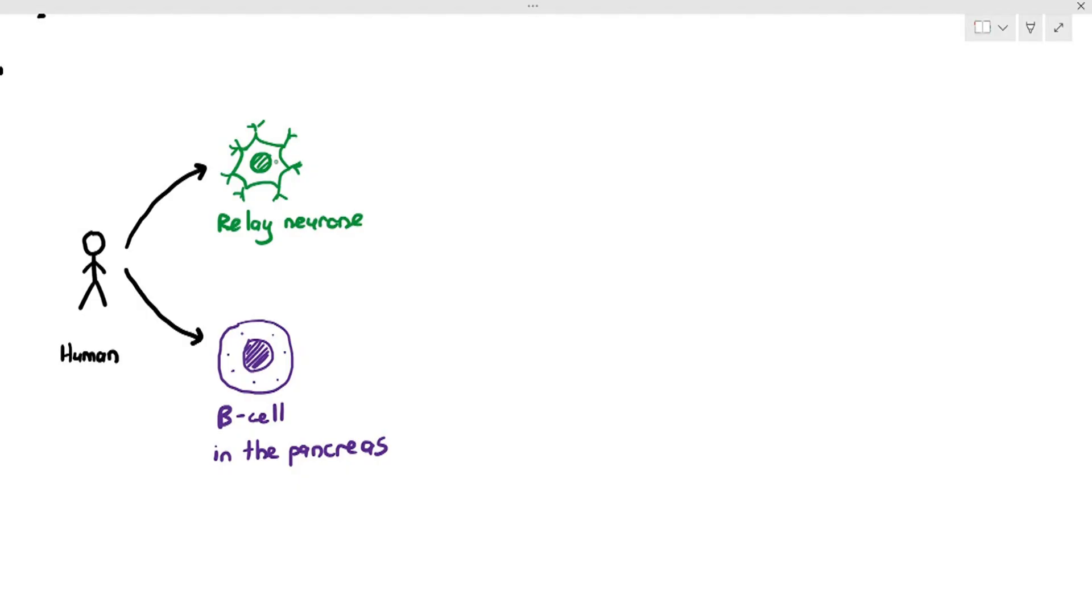And most of my students will say no, because the relay neuron has a function where it transmits impulses, and the beta cell in the pancreas, in chapter 14, we studied that the beta cell produces and releases a hormone known as insulin. These two cells have completely different functions. Then my second question is, I will ask, are these two cells genetically identical? That means these two cells belong to your body. That means these are your relay neurons and your beta cells. So are they genetically the same? A lot of my students will actually say that no, these two cells are not exactly the same.